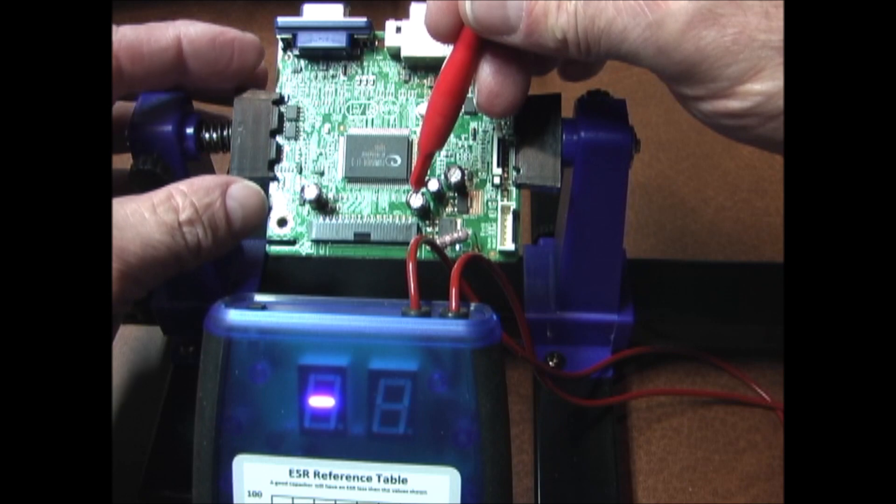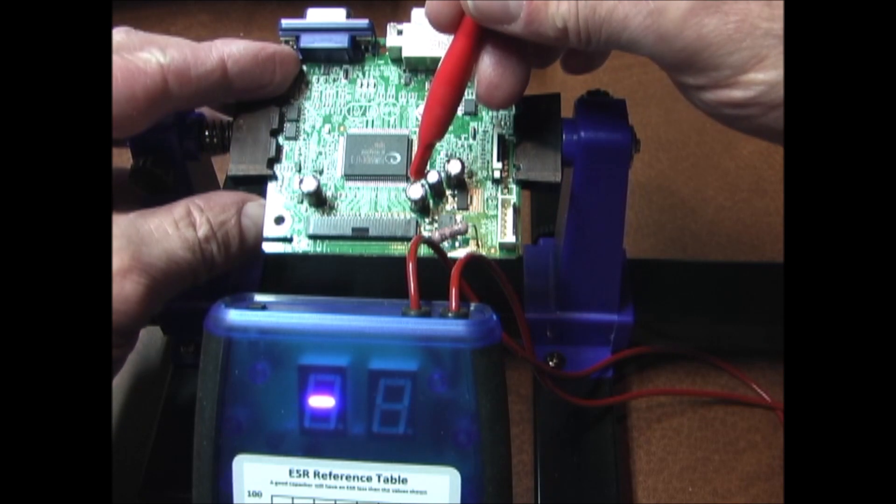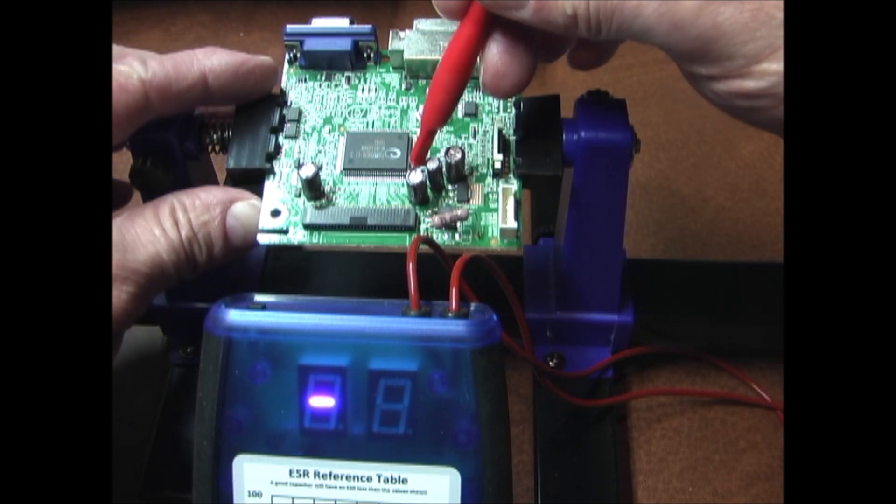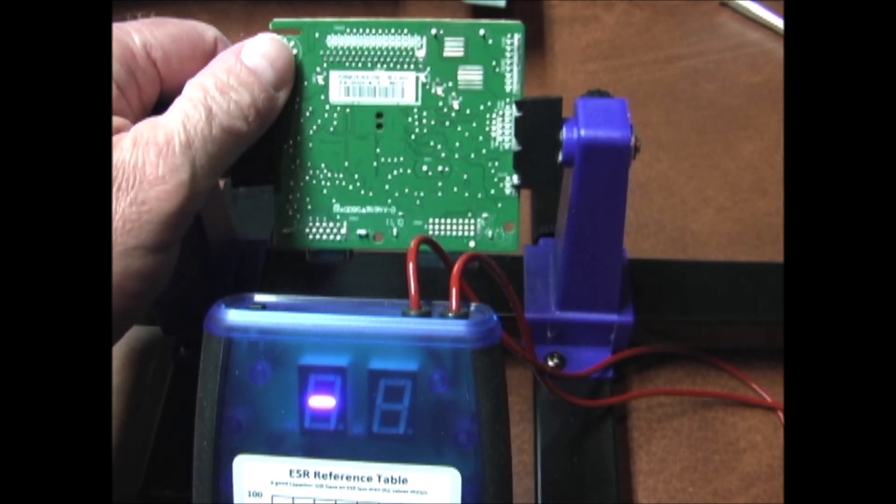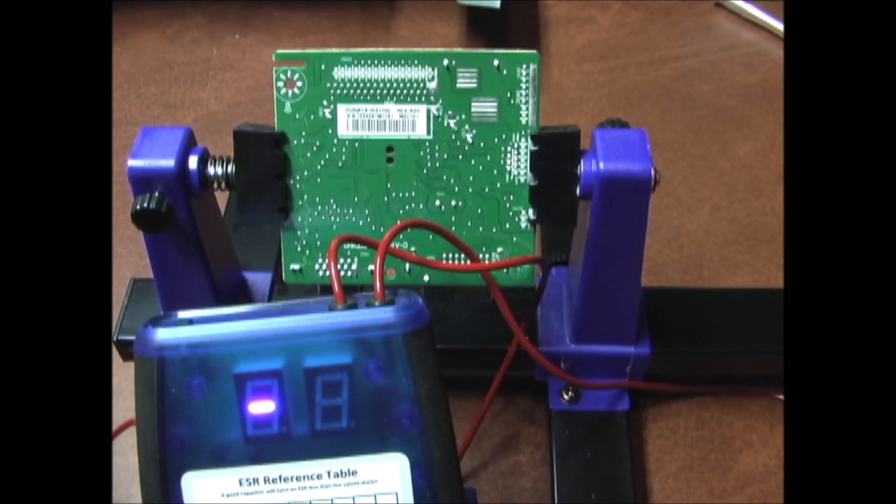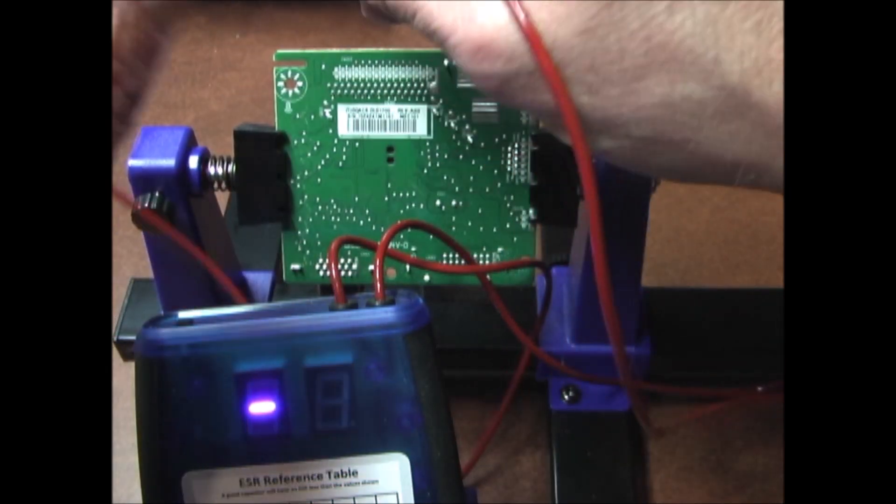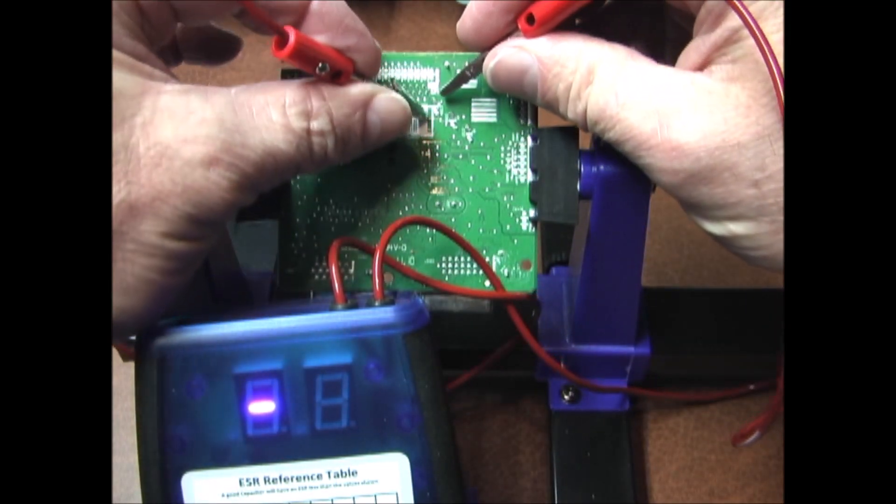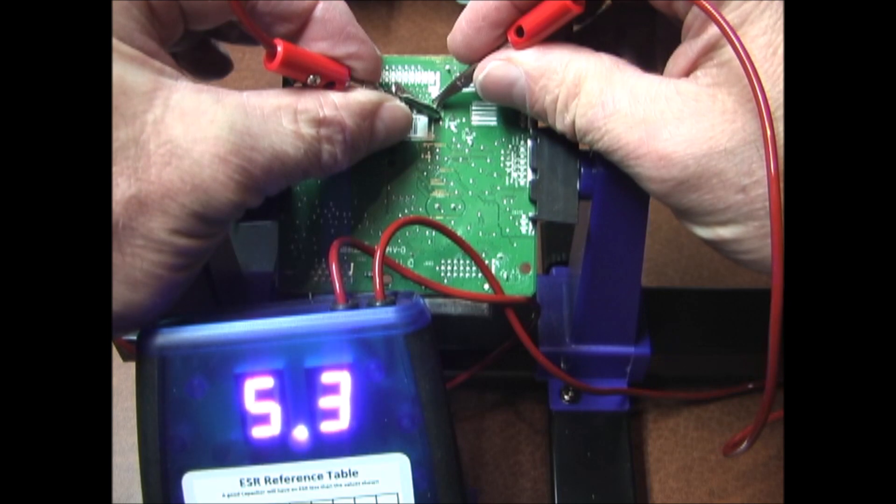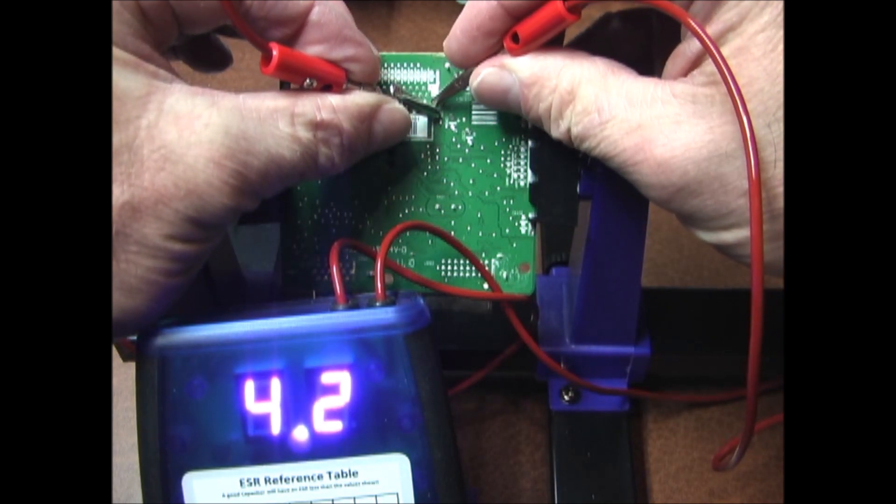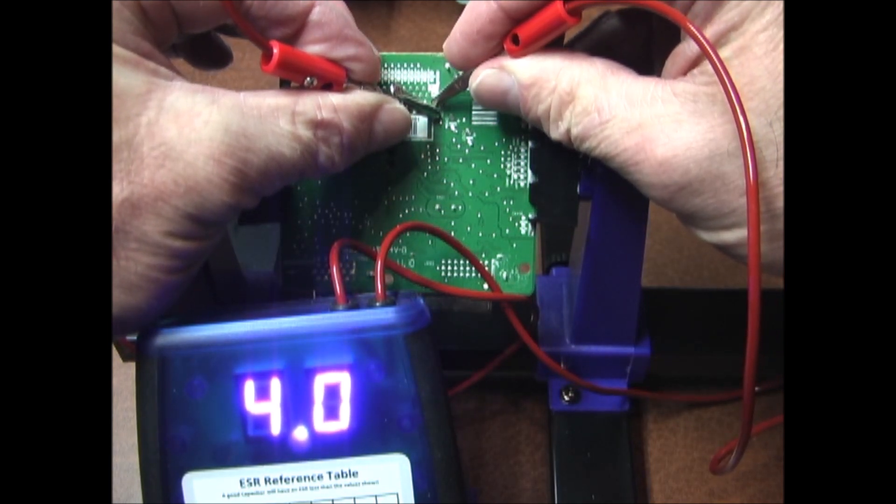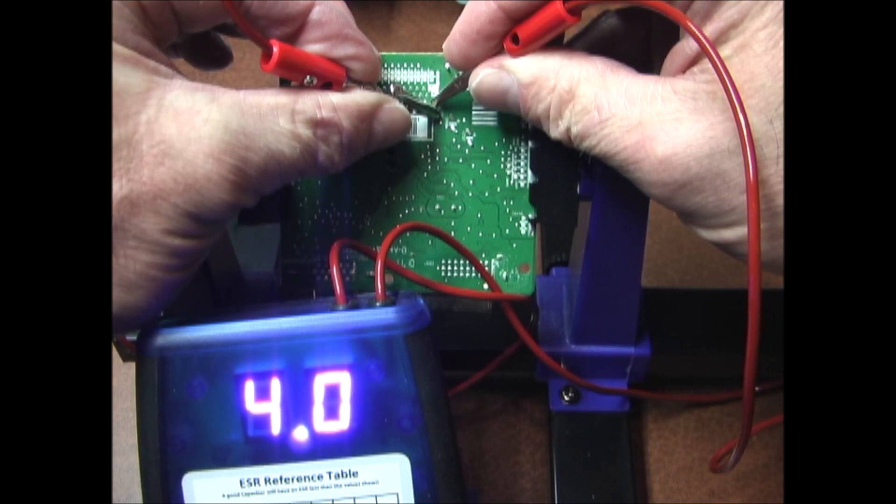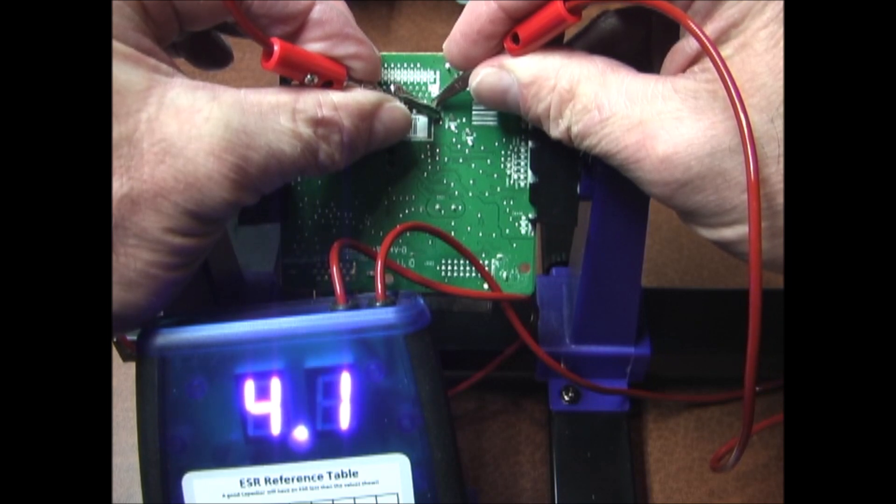Next I'm going to check this one over here. It's the same size, 25 volt 100 microfarad. You can see I'm getting about 4.0 ohms on that, which is well above the 0.5 max. So that capacitor is bad and I will replace it.